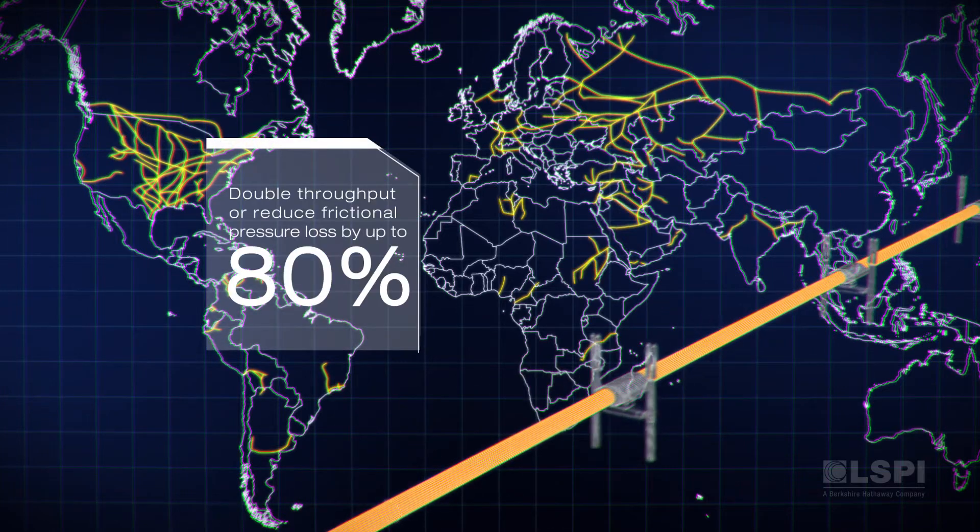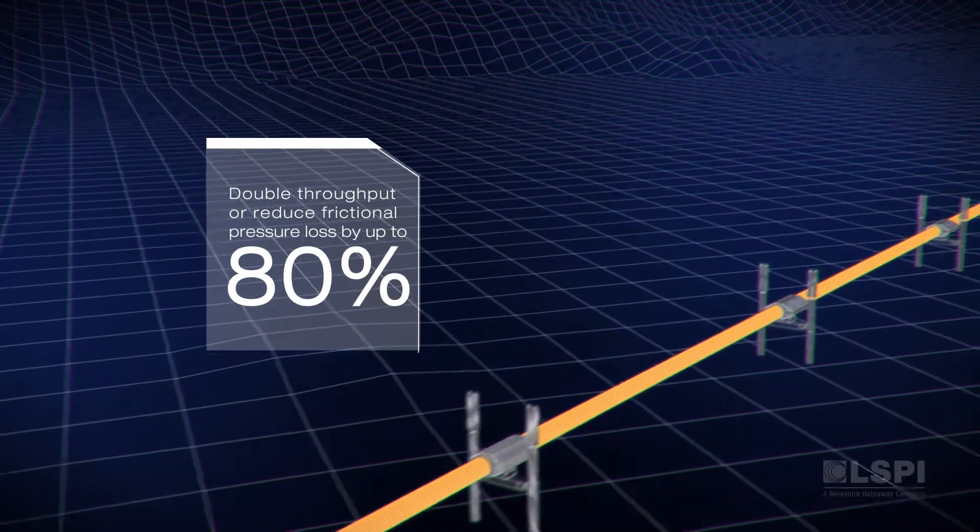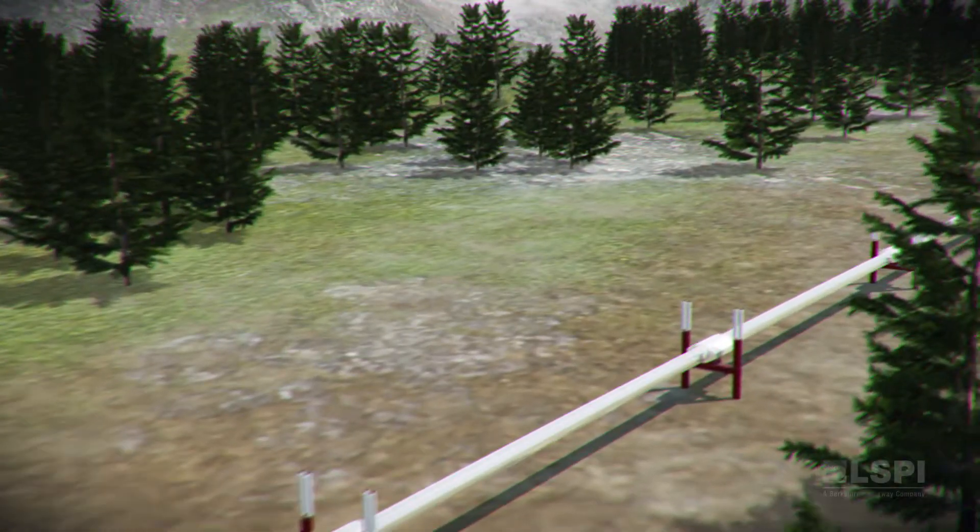LSPI can double the throughput or reduce frictional pressure loss by up to 80%, allowing pipeline operators to increase capacity with minimal capital investment.